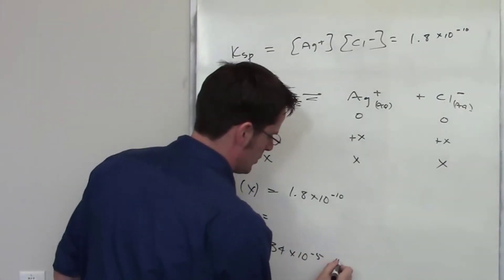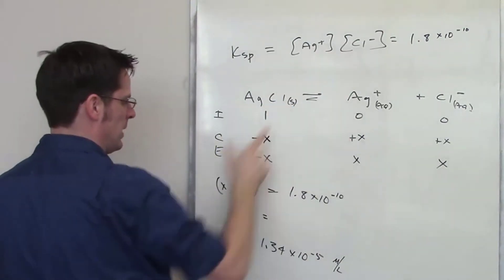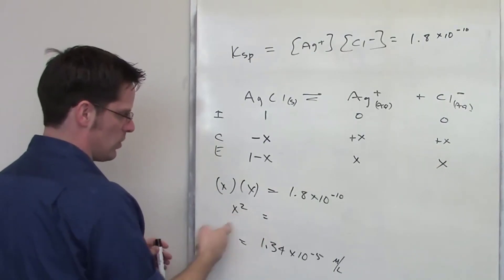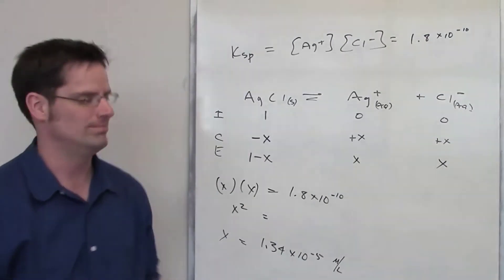This is in units of moles per liter, and the reason is because I've got moles per liter for each of these and they're multiplied together. So that gives me moles per liter squared, and then I take the square root of it to solve for x and it leaves me back moles per liter.